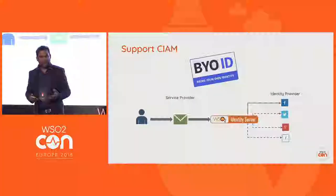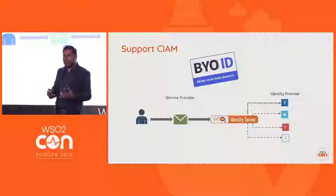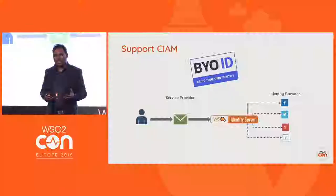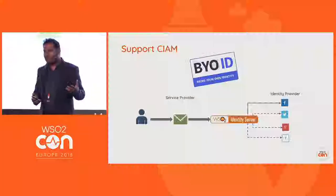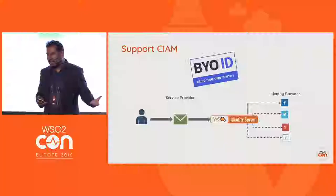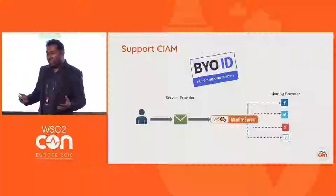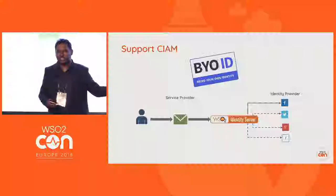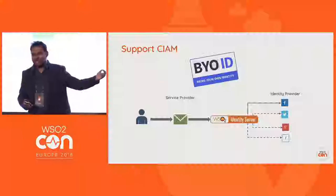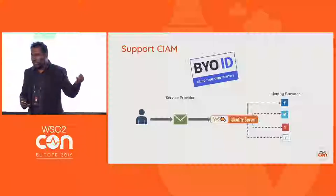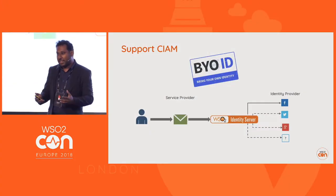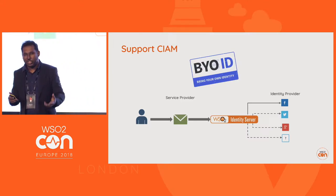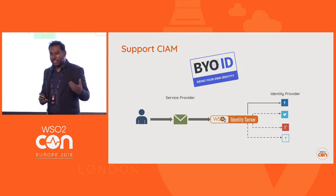There is another use case: bring your own identity. There is a problem in CIAM called registration spaghetti, where whenever people visit a website, they are asked to register — it's a kind of anti-pattern. Instead, we now have bring your own identity, where people can bring their existing digital identity, most popularly from a social network. In such scenarios, before you onboard such an identity, you have to make sure the identity provider has properly authenticated the user.